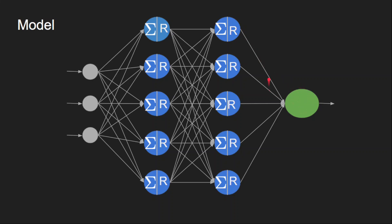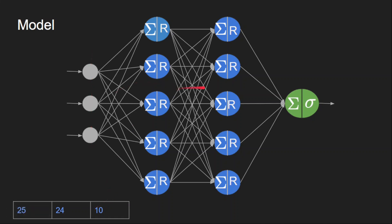What about the output layer? We calculate the weighted sum of the five inputs as usual, but we cannot use ReLU activation here because ReLU is unbounded on the positive side. Since the output we expect is a probability score — a value between 0 and 1 — we use the sigmoid activation function. The architecture design is now complete. We have the data and the model. Next, we need to train the model, which means learning the weights and biases — these are the parameters of the network.